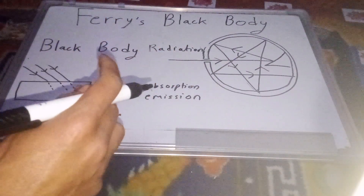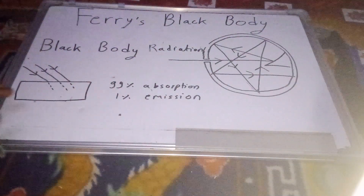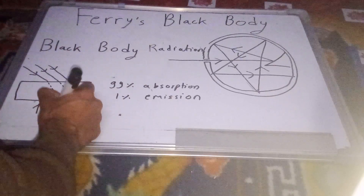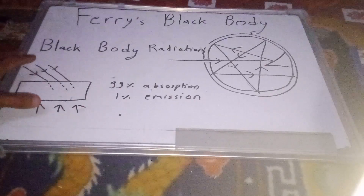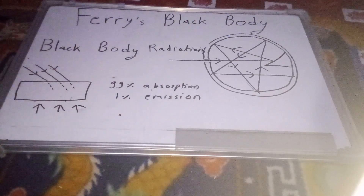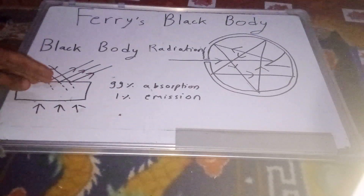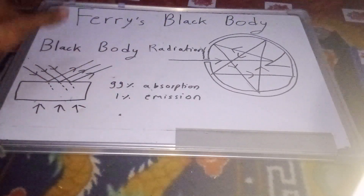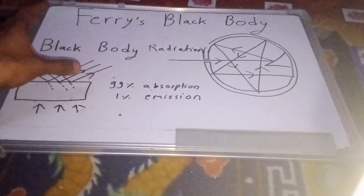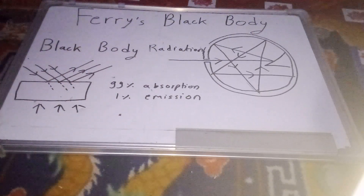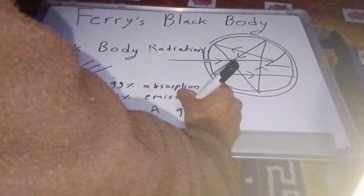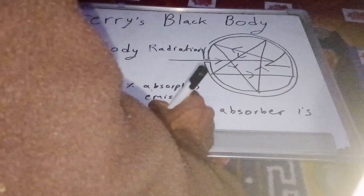Black body radiation is a different concept. Black body — based on heat or temperature — absorbs all radiation and emits all radiation. A good absorber is a good radiator.